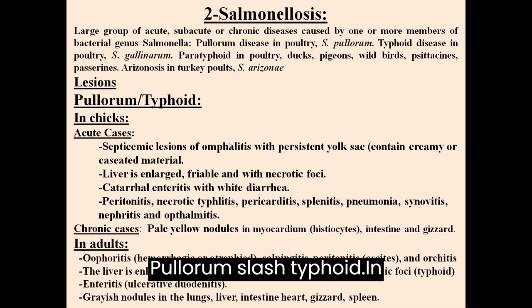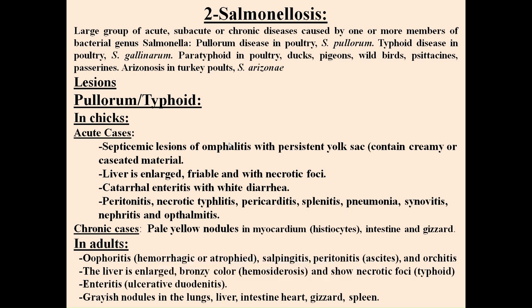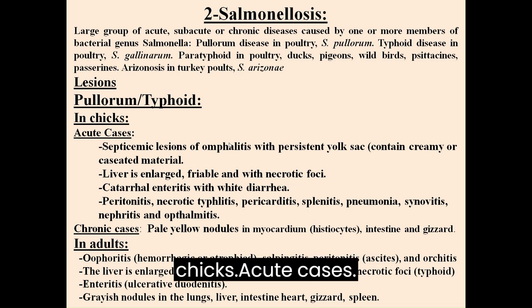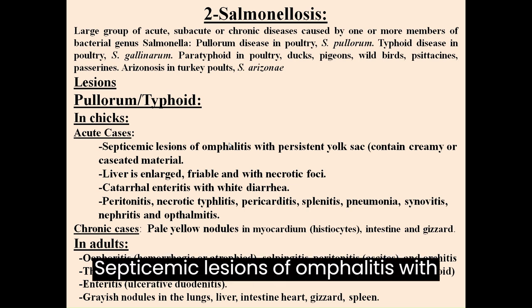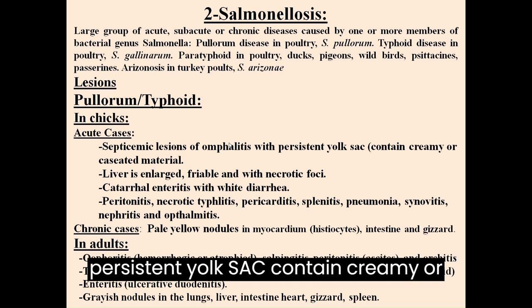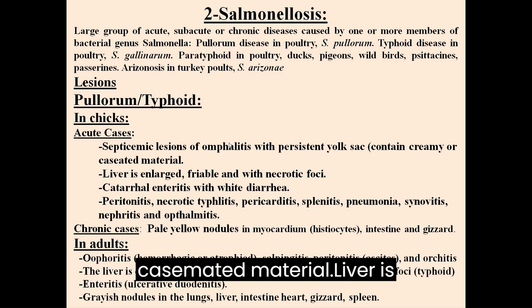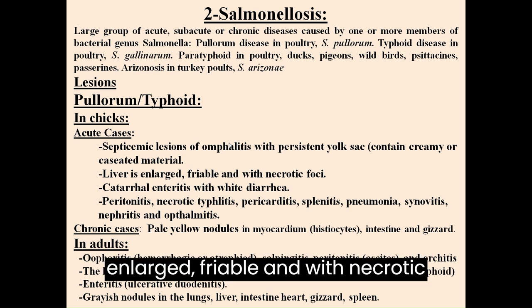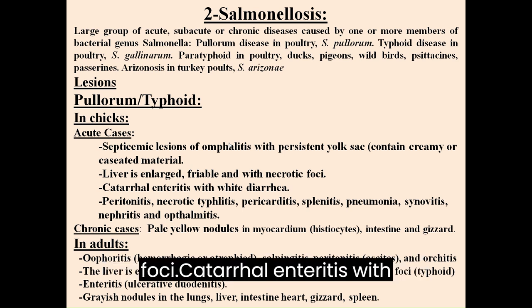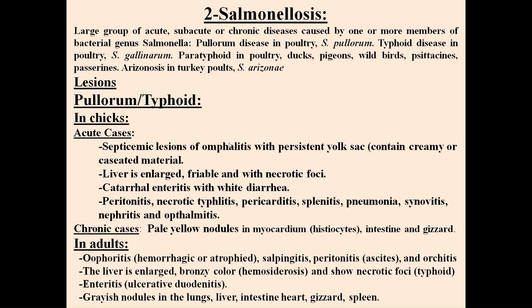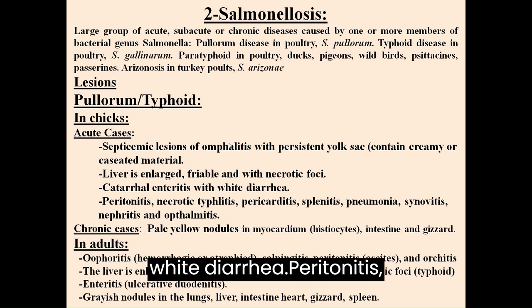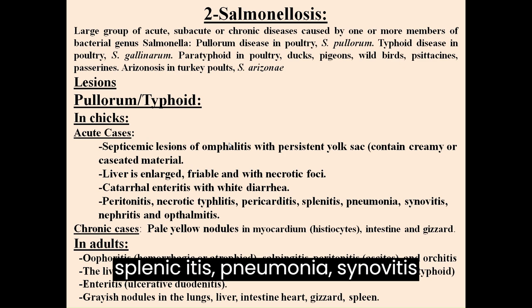Lesions of Pullorum/Typhoid: In chicks, acute cases show septicemic lesions of omphalitis with persistent yolk sac containing creamy or caseated material. The liver is enlarged, friable and with necrotic foci. Catarrhal enteritis with white diarrhea. Peritonitis, necrotic typhlitis, pericarditis, splenitis, pneumonia, synovitis, nephritis and ophthalmitis.